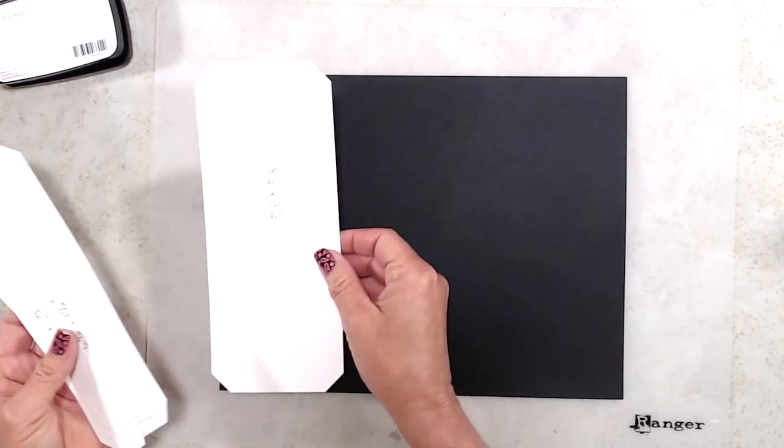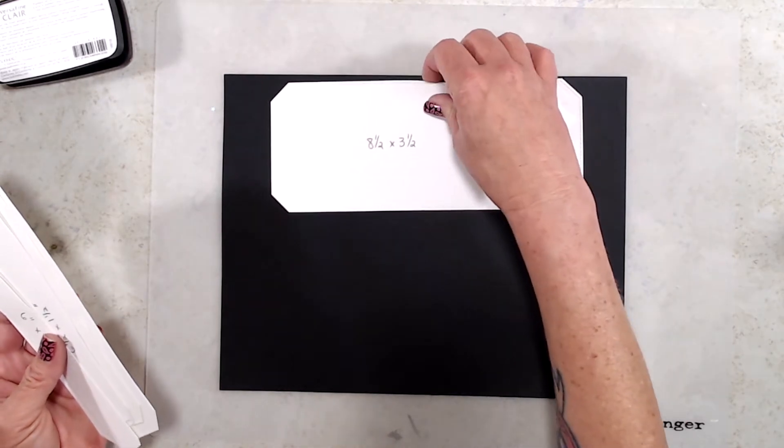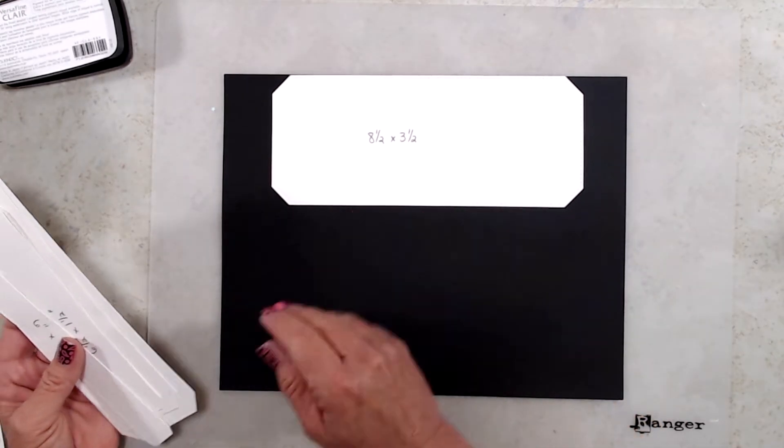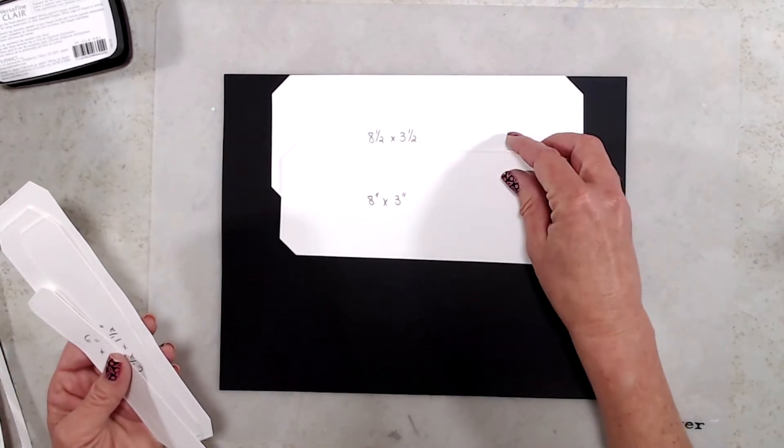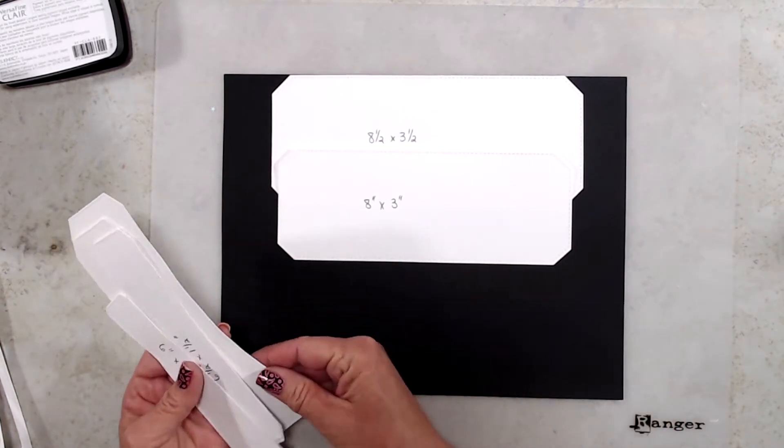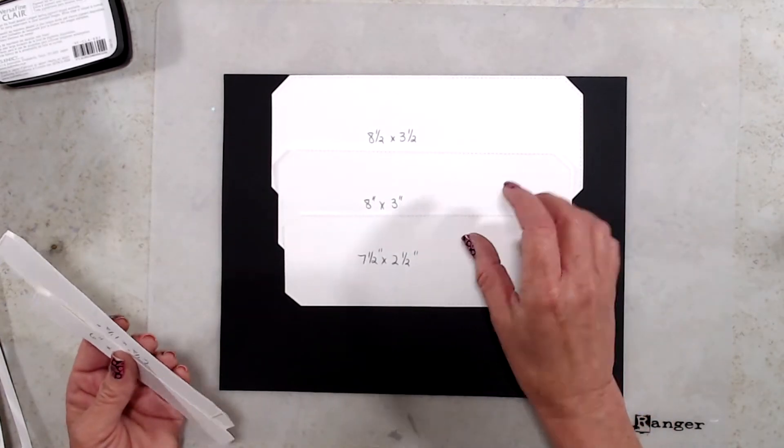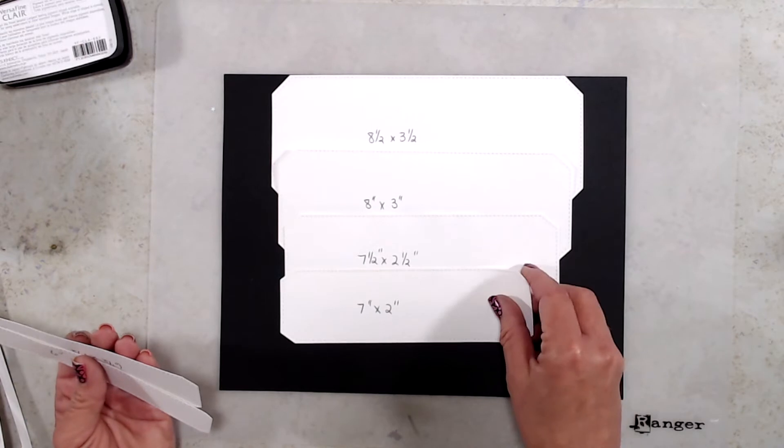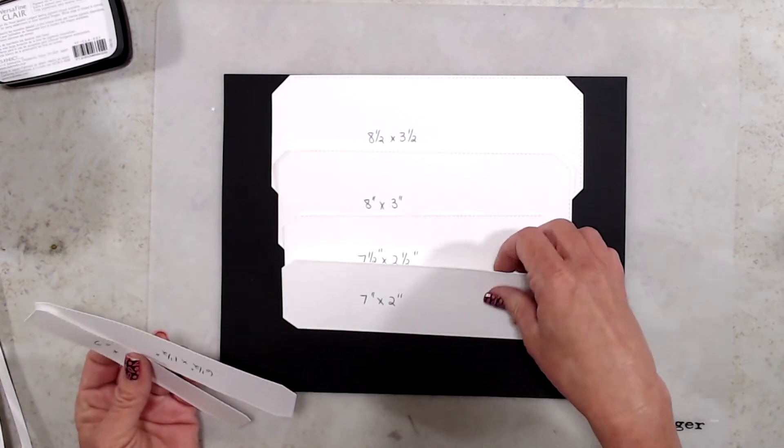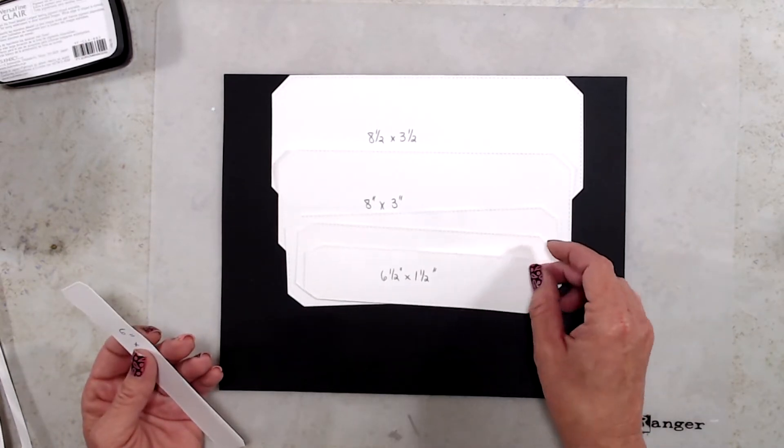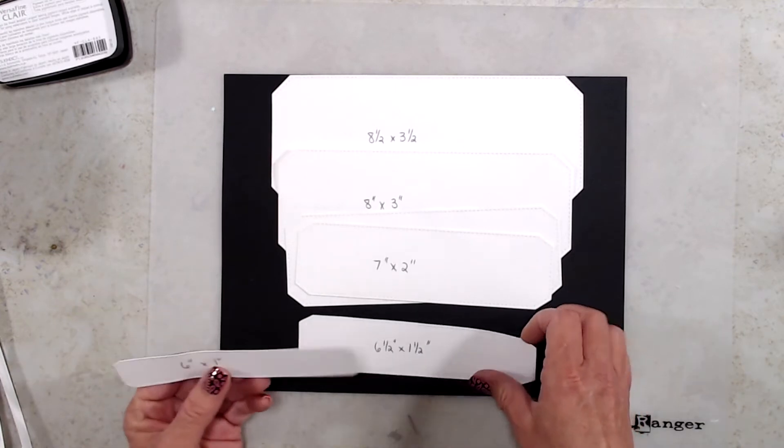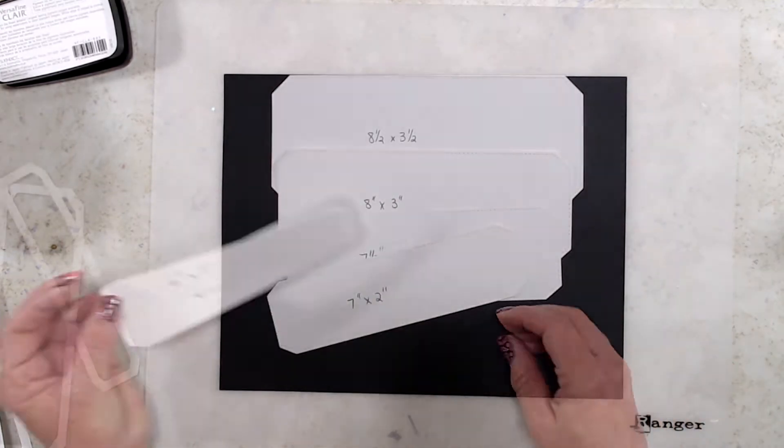They're all really very good sizes. The largest die measures eight and a half by three and a half inches. The second one measures eight by three. The next one is seven and a half by two and a half, then seven by two, six and a half by one and a half, and finally the smallest die measures six inches by one inch.